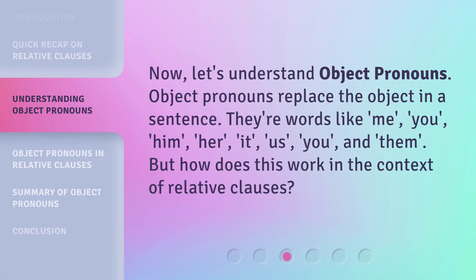Now let's understand object pronouns. Object pronouns replace the object in a sentence. They're words like me, you, him, her, it, us, you, and them.